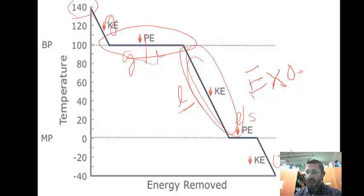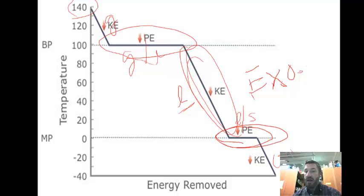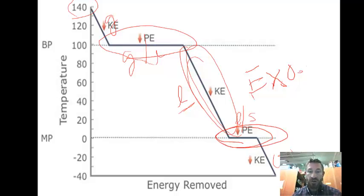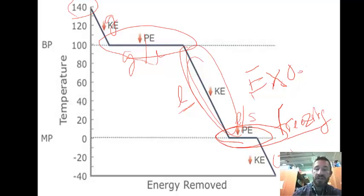At the flat portion where we're removing energy and taking away potential energy, you're going from a liquid to a solid — so that would be freezing, not melting. So on the cooling curve we have condensation, then freezing — F-R-E-E-Z-I-N-G — going from a liquid to a solid.